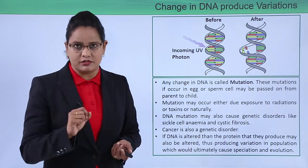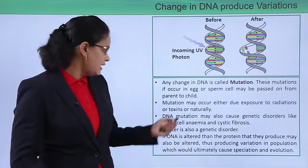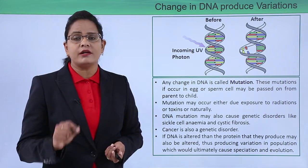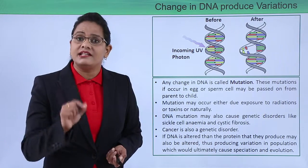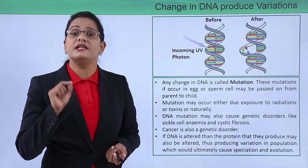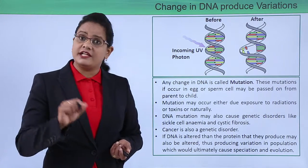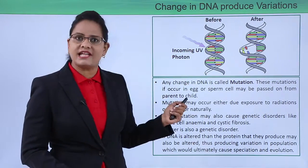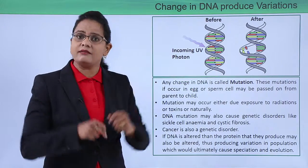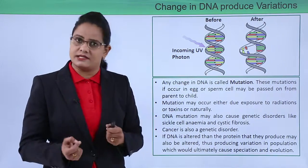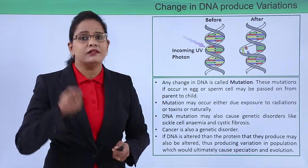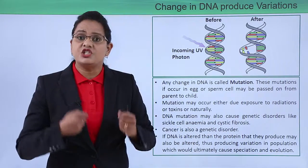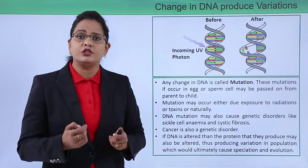DNA mutation may also cause genetic disorders — such as sickle cell anemia, cystic fibrosis, and cancer, a disease which has spread all over and for which we fear there is no cure. This disease is because of mutation in the DNA. If the DNA is altered — for example, by a UV photon damaging the DNA, breaking the sequence of bases, causing them to reform differently — the amino acid changes and then the functional protein changes. If these alterations accumulate, it may lead to speciation or evolution.